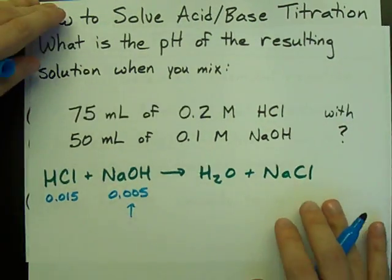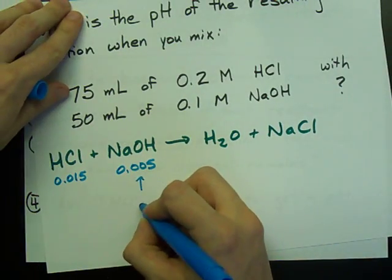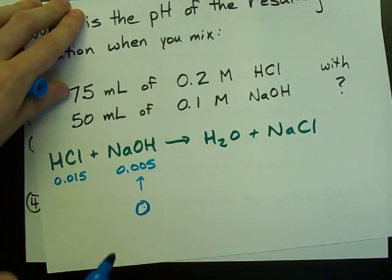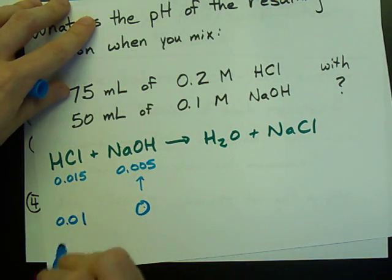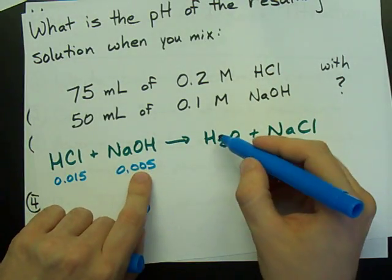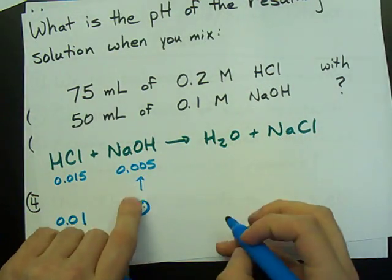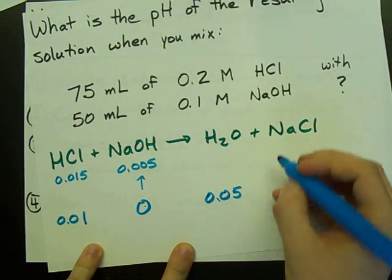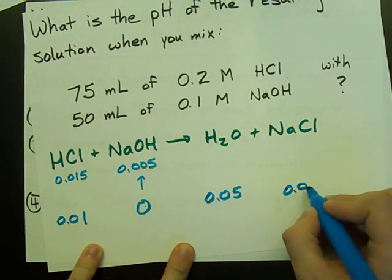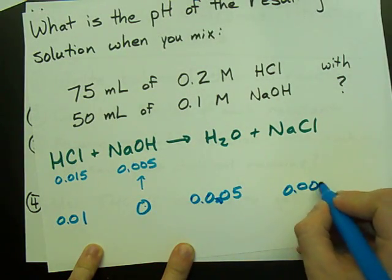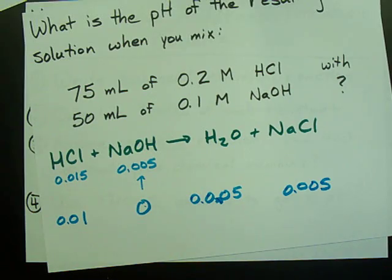Obviously, all of my NaOH is going to be used up, so I now have 0 of it. I'm going to use up that much of my HCl. I have that much remaining. And I can only make one of these for every one of these that I use up. So I'm going to get 0.005 of those, and 0.005. That's 0.005.